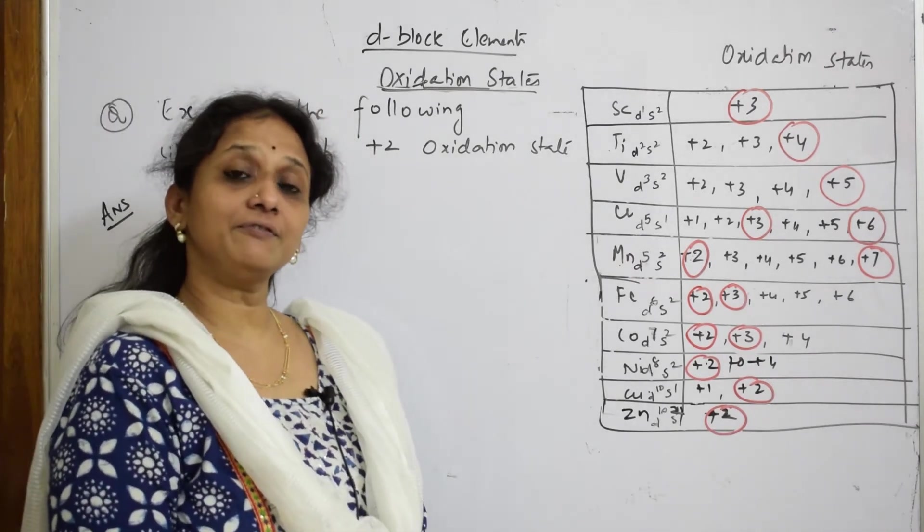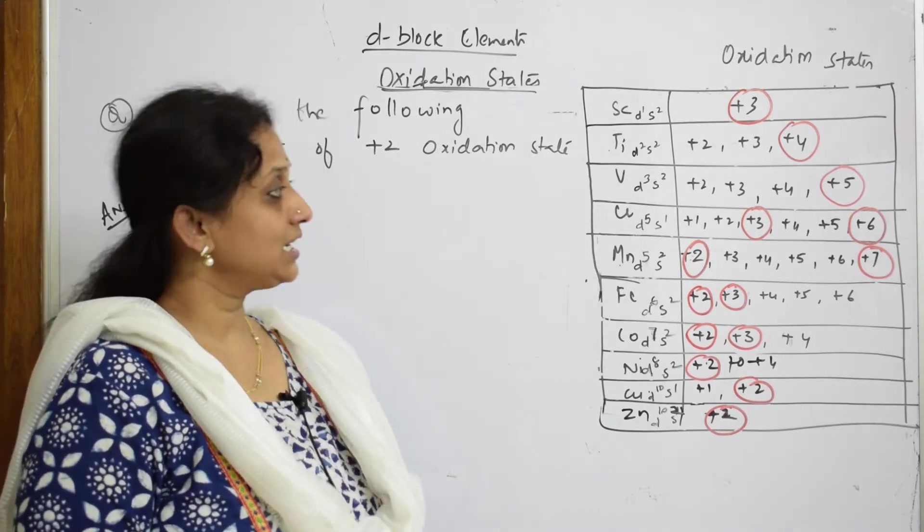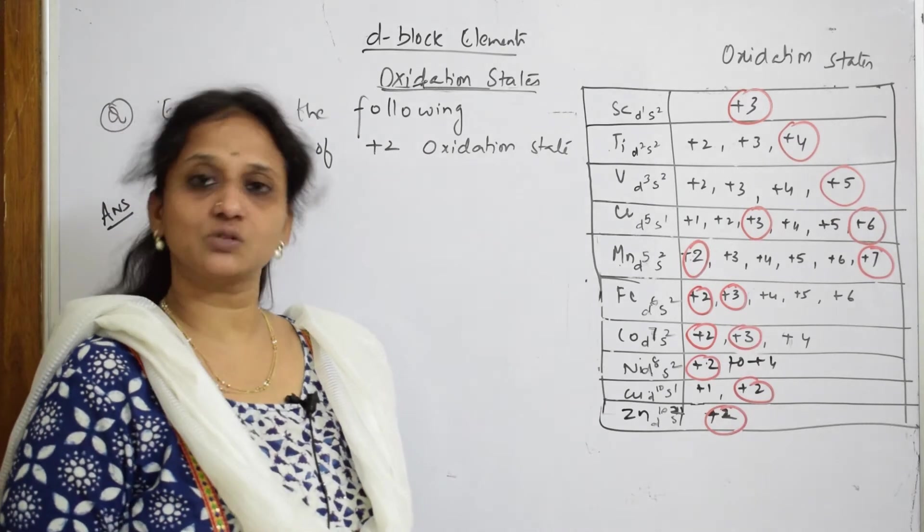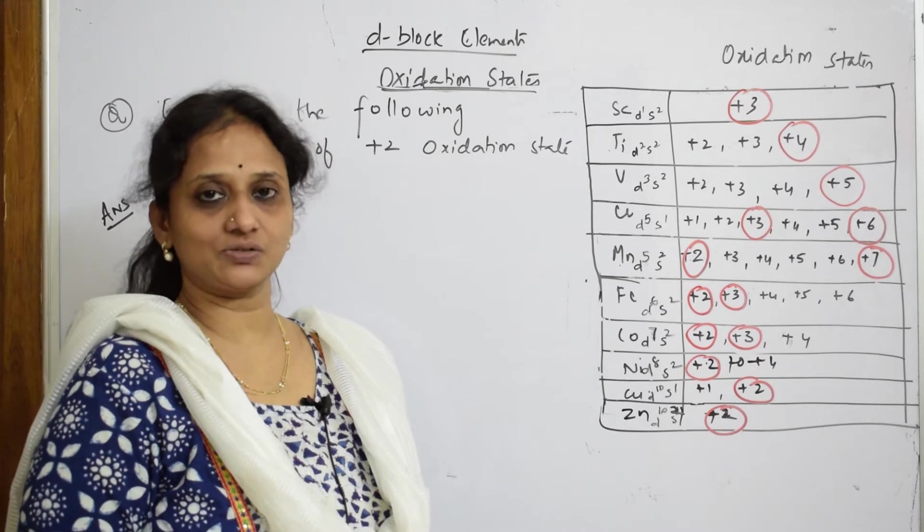Whenever I see the oxidation state of d-block elements, that is your 3d series, they're showing variable oxidation states. What is the reason? Because of the presence of n-1 d electrons, correct. First, we very well know the variable oxidation states.